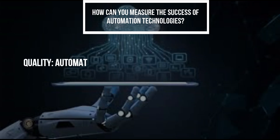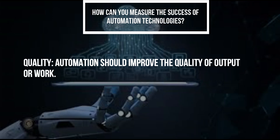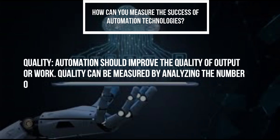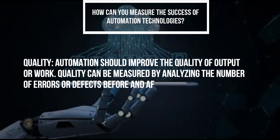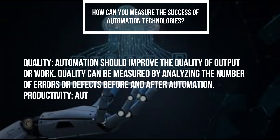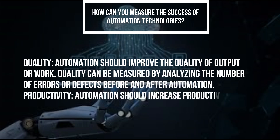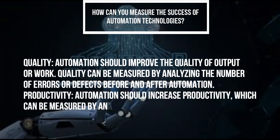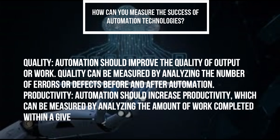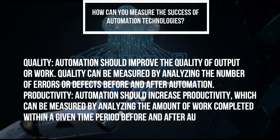Quality: automation should improve the quality of output or work, which can be measured by analyzing the number of errors or defects before and after automation. Productivity: automation should increase productivity, which can be measured by analyzing the amount of work completed within a given time period before and after automation.